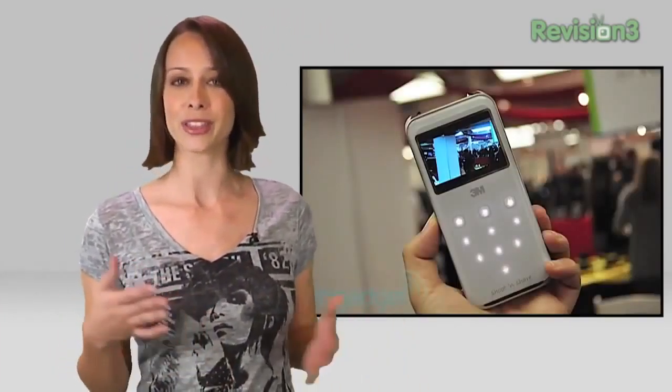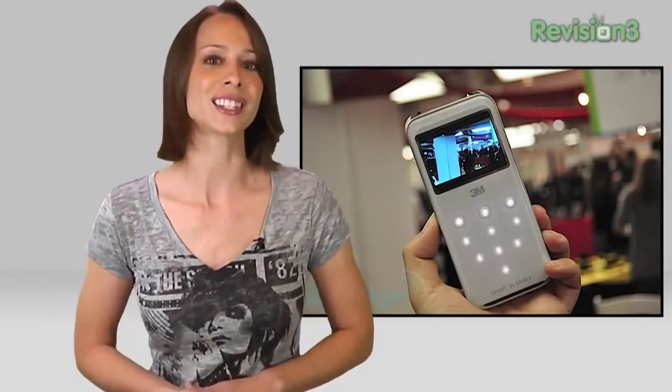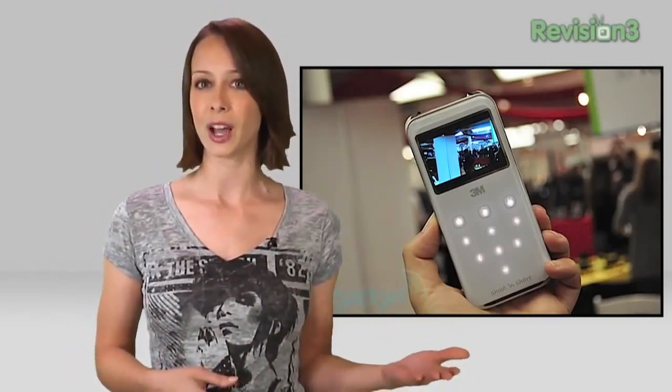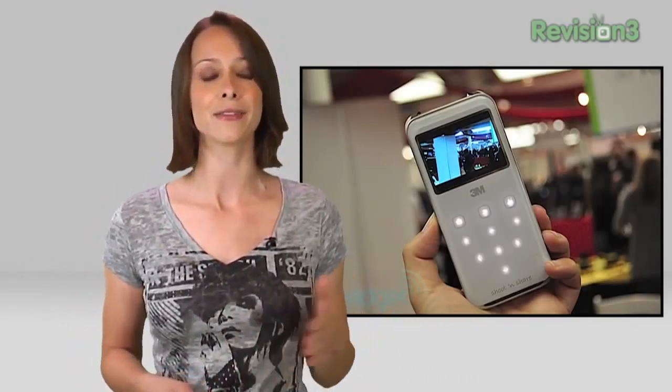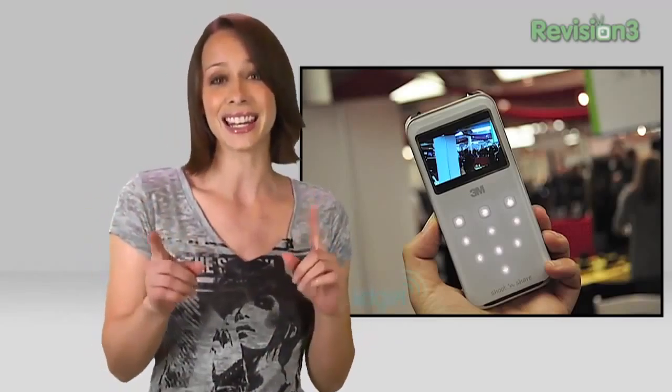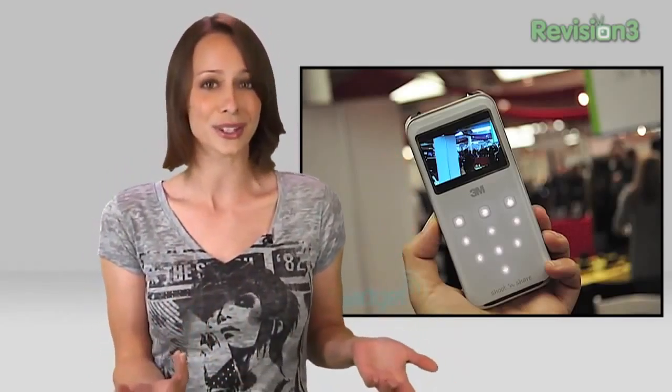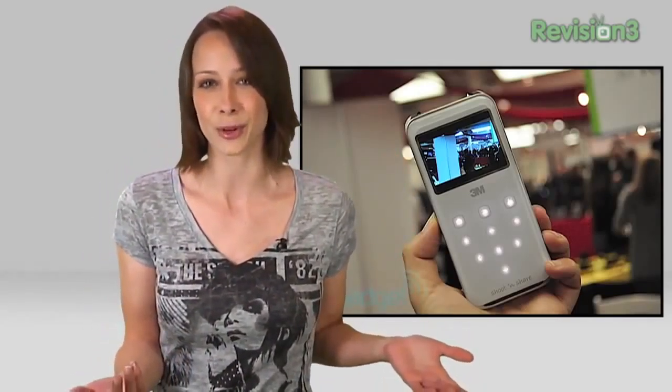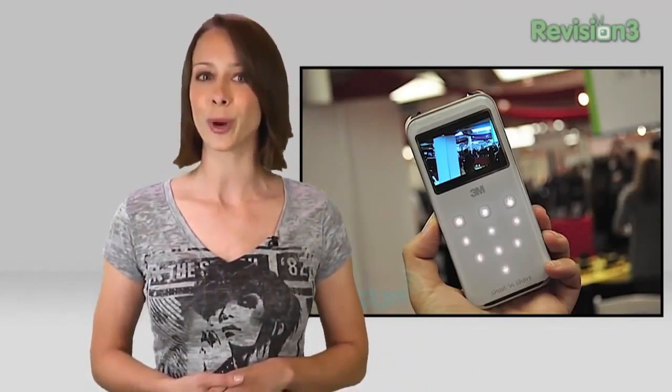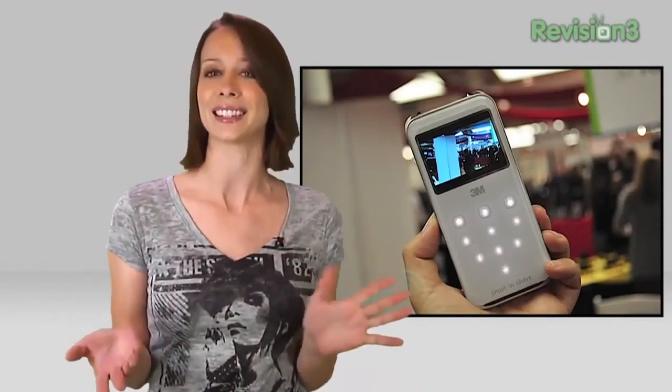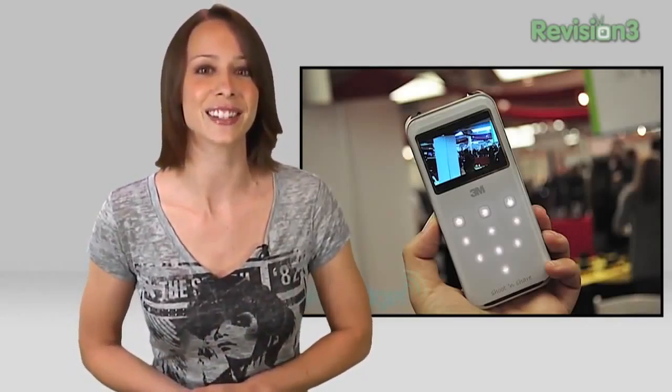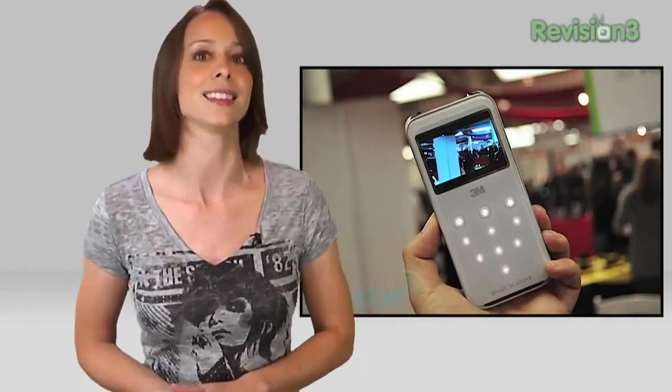3M is combining camera capability with projection capability with their shoot and share device. With its camera, it'll record 720p video in an MP4 format and take 5 megapixel stills. Then, it'll display that video or those stills on a wall or flat surface at 640x480. The projector has 14 lumens of brightness, but I hear it's not as dim as it sounds. It's $299 and has HDMI and a microSD slot.